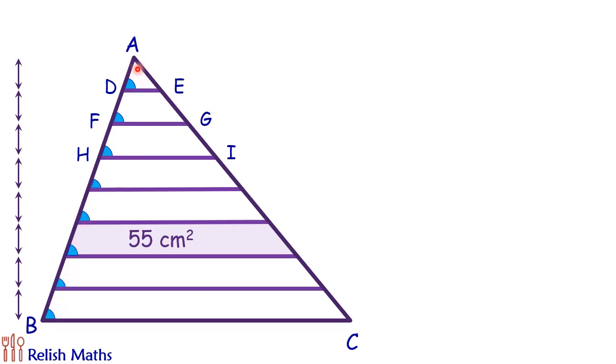This angle A is common in all the triangles. So by angle-angle similarity, we can say that all these triangles—ADE, AFG, AHI—all these triangles are similar to each other.